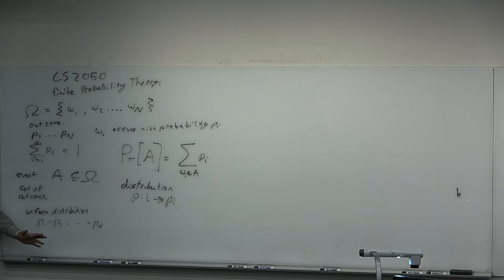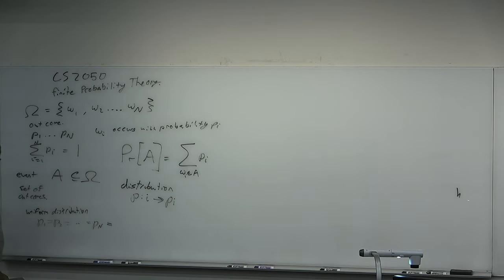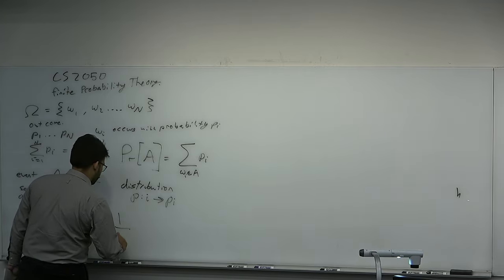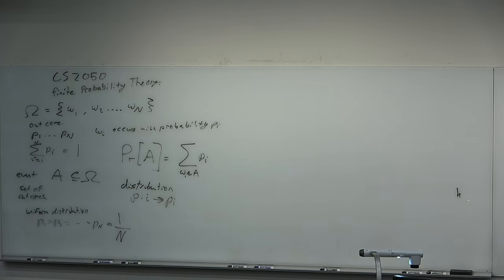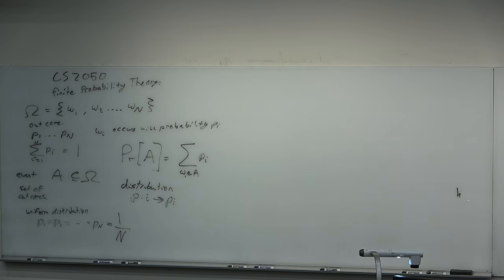You have n possible outcomes and they all happen with equal chance. If you have a uniform distribution, what is P i equal to? One over n. If you have n possible chances and n possible outcomes each equally likely, then the probability of one of those outcomes is 1/n. Why? Because you have n things and they must sum to 1, so each one must be 1/n. If you have two outcomes — a coin — you have a half chance of heads and half chance of tails. Three outcomes: one over three, and so on.